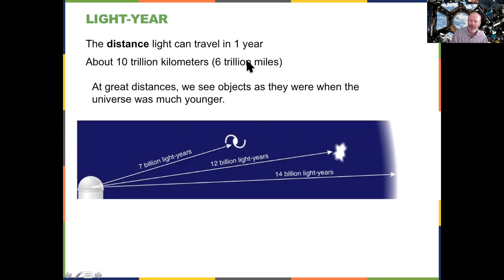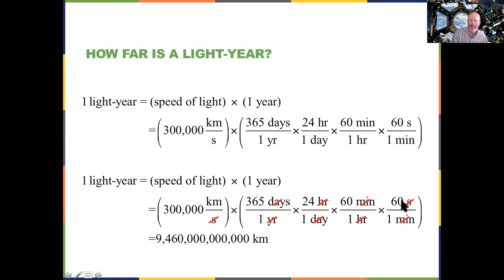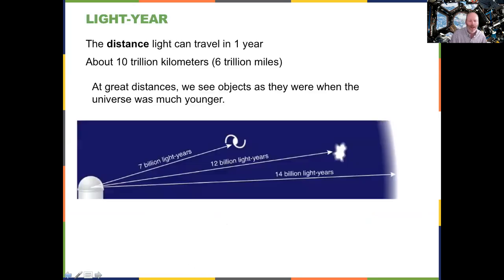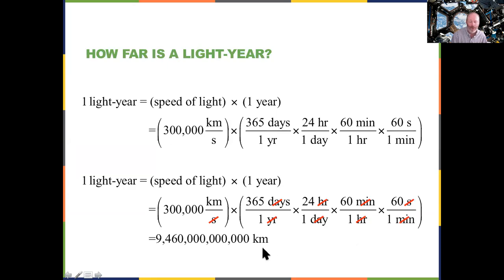A light year is 10 trillion kilometers, or 6 trillion miles. A parsec is 3.26 times that. To calculate a light year: 300,000 kilometers per second, times 60 seconds per minute, times 60 minutes per hour, times 24 hours per day, times 365 days per year. We don't worry about leap years when dealing with numbers this big. This gives us 9.46 trillion kilometers, which we round to 10 trillion. Most of the time people say 10 rather than 9.